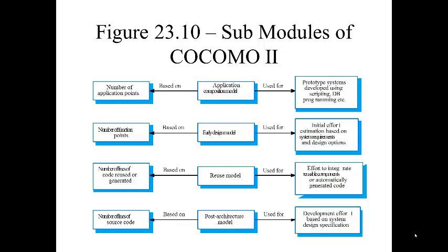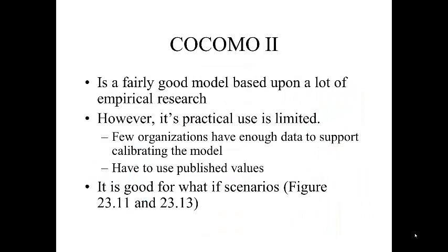In addition to these four sub-models, COCOMO 2 has a larger number of factors that influence M and B is a bit larger. COCOMO 2 is a fairly good model based on extensive empirical research by Boehm and his team at USC. However, its practical use is limited — few organizations have enough data to calibrate the model for their own purposes, so you have to use published values. It is very good for what-if scenarios, featured in figures 23.11 and 23.13.